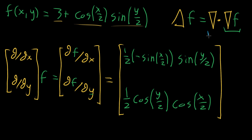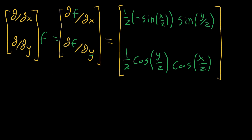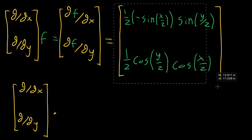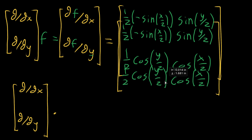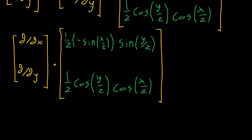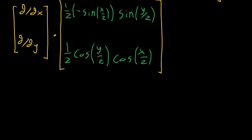The next step is to take the divergence of the gradient. With the divergence, we imagine taking that del operator and dot-producting it with the gradient vector. Scrolling down to give some room, we take that vector of operators — partial partial x and partial partial y — and take the dot product with the entire gradient we just computed.